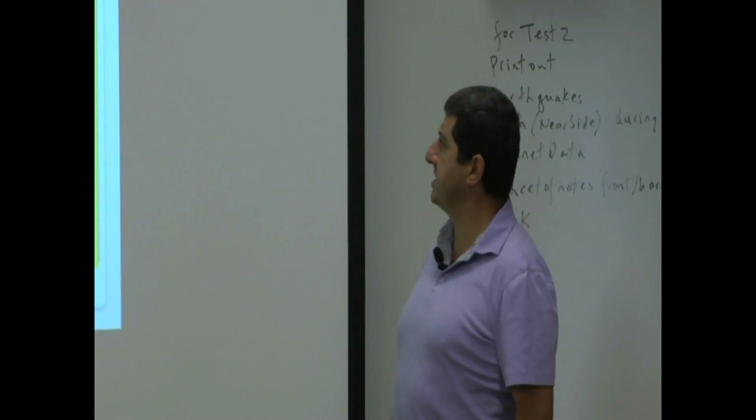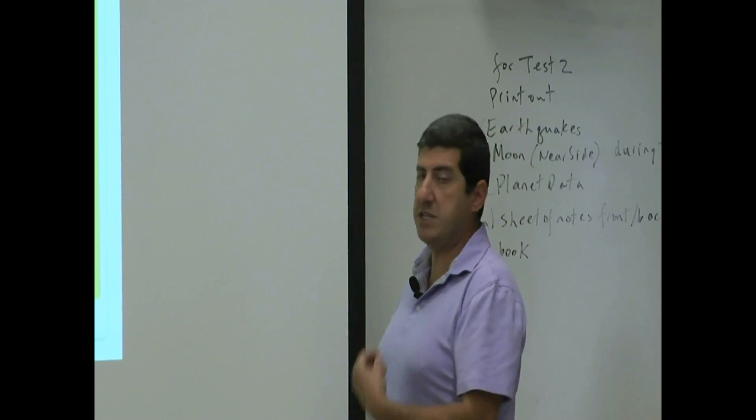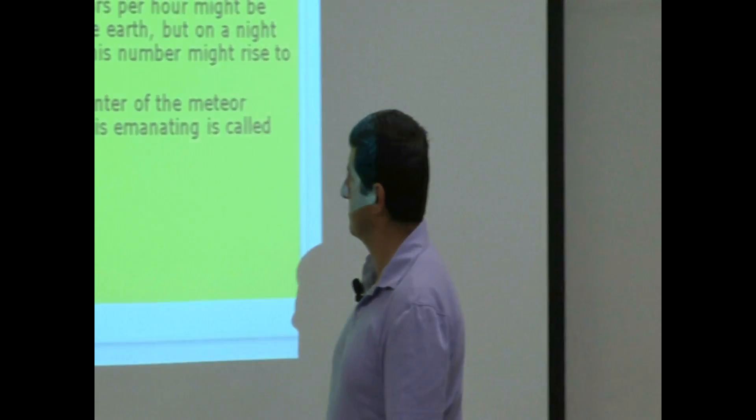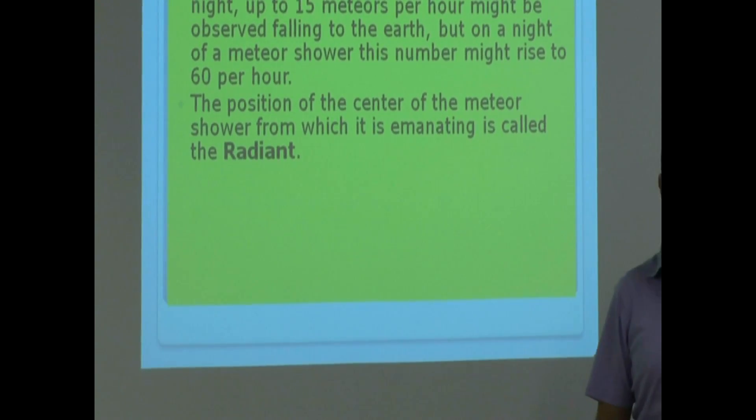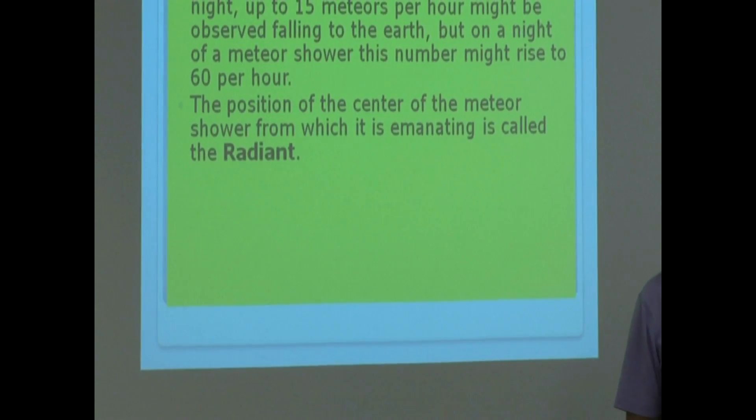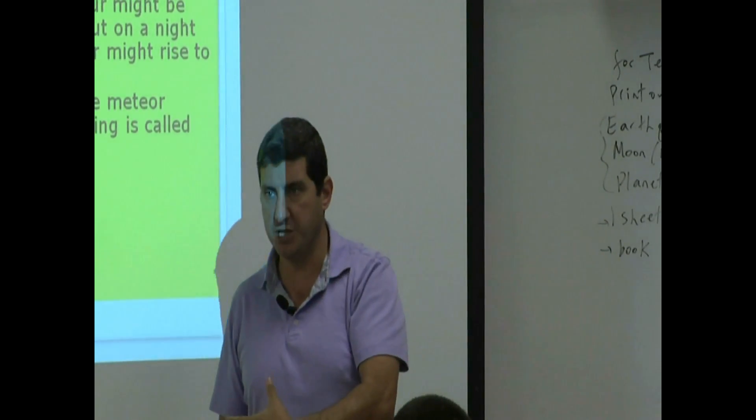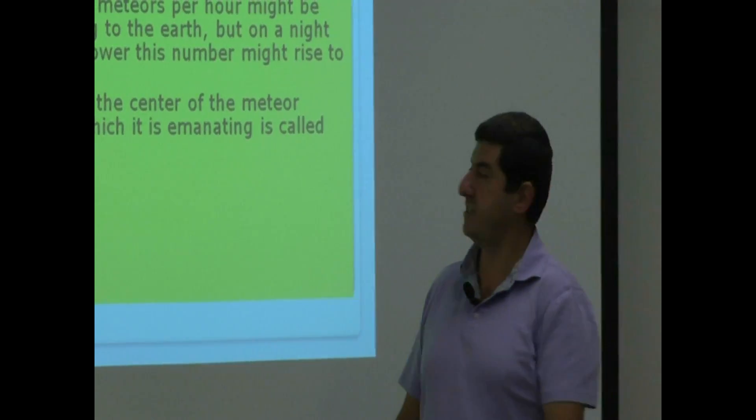The position of the center of the meteor shower from which it is emanating is called the radiant. So the meteor shower will usually appear to be coming from a certain spot, and whatever constellation it's coming from, we call the meteor shower after that name. Like the Leonid meteor shower comes from the constellation Leo. The Perseid meteor shower comes from the constellation Perseus.